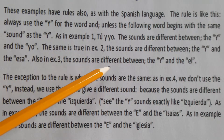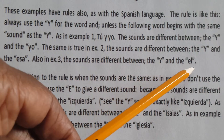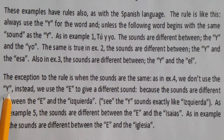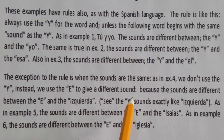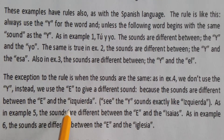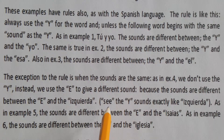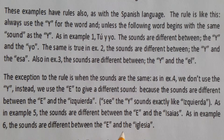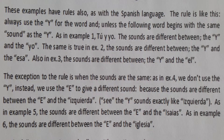Also in example three, the sounds are different, so we use 'y.' The exception to the rule is when the following word begins with the 'e' or 'i' sound, as in example four — we use 'e' instead of 'y' to avoid blending the sounds. The same applies in example five, 'María e Isaías,' and example six, 'la escuela e iglesia.' Check it out and practice. Call me if you have any questions or just want to practice.